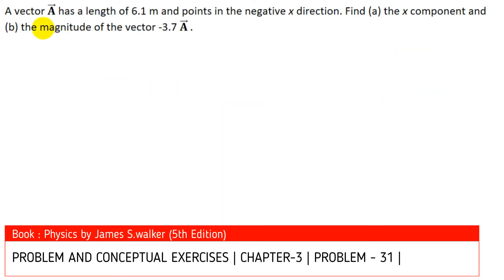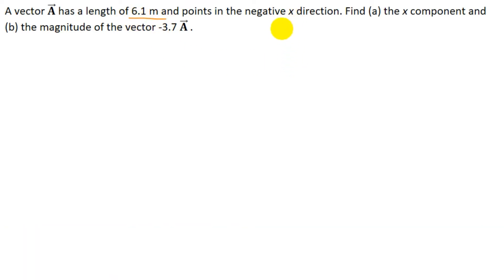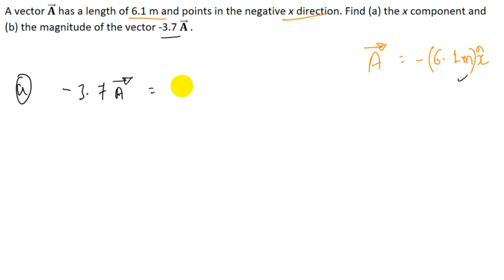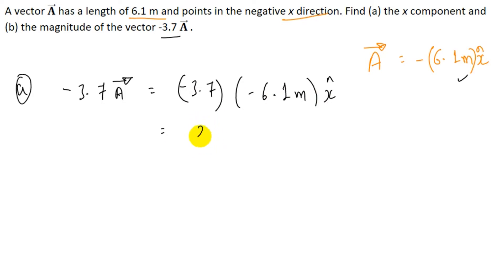In this question, we are given that there is a vector A that has a length of 6.1 meters and points along the negative x-direction. So we can write vector A as −6.1 meter x-cap. Now, there are two parts to solve: in part A we find the x-component, and in part B we find the magnitude of vector −3.7A. Multiplying: −3.7 × (−6.1 meter x-cap) = 23 meter x-cap.